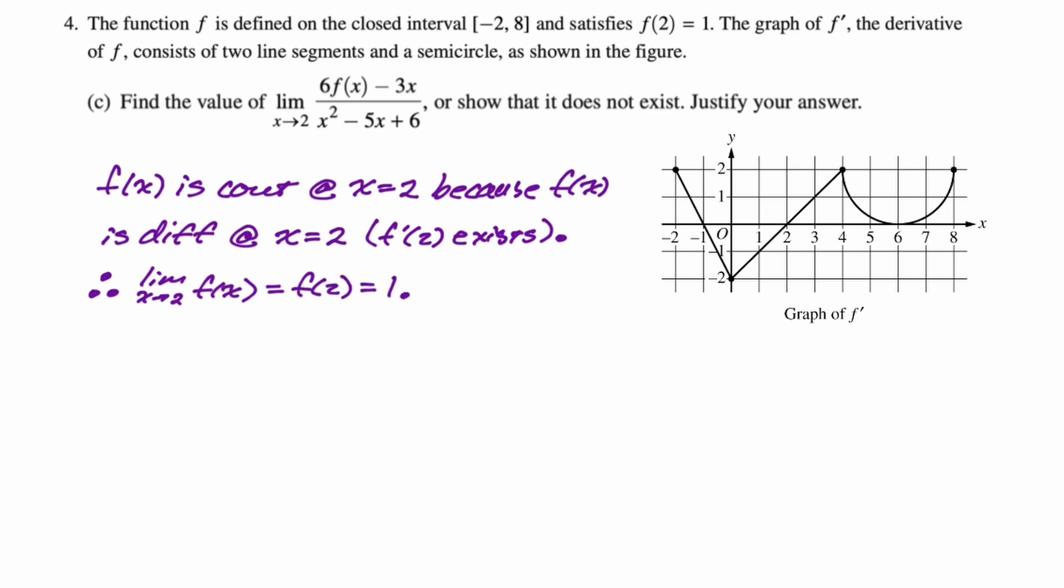So now we know that limit. The whole reason we need to know that limit is so that we can say that L'Hopital's rule applies. So the limit of the top and the limit of the bottom are both going to equal zero. Maybe I won't make you watch me write all that out. So the limit of the top, the limit as x approaches two: six f of x minus 3x, that's six times one minus three times two, that's zero. And then the limit of the bottom as x approaches two, you get four minus ten plus six. So ten minus ten is zero. Both of those are zero. We can use L'Hopital's.